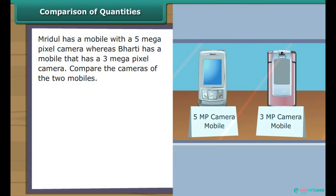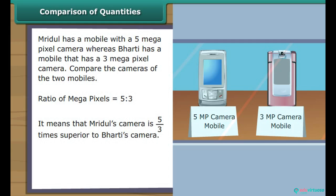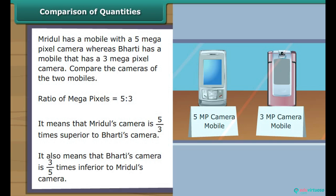Mridul has a mobile with a 5 megapixel camera, whereas Bharti has a mobile with a 3 megapixel camera. Let us compare the cameras with the help of ratio. We express the ratio of the megapixels as 5 is to 3. It means that Mridul's camera is 5/3 times superior to Bharti's camera, and Bharti's camera is 3/5 times inferior to Mridul's camera.